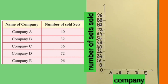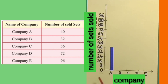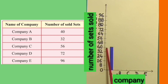Now, let's see how many mobile sets of company A were sold. To represent mobile sets sold by company A on this bar graph, we will draw a rectangular bar starting from 0 to 40 at the level of 40. So, we have drawn a bar for company A at the level of 40.